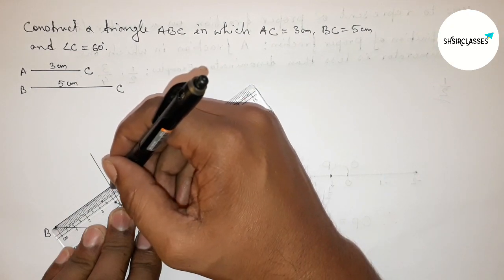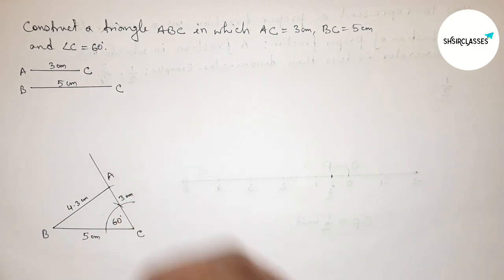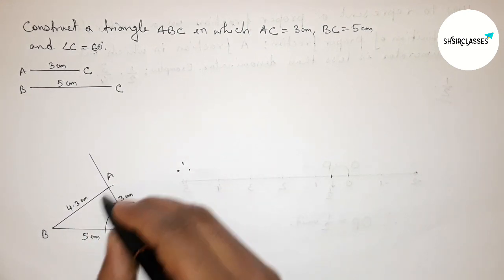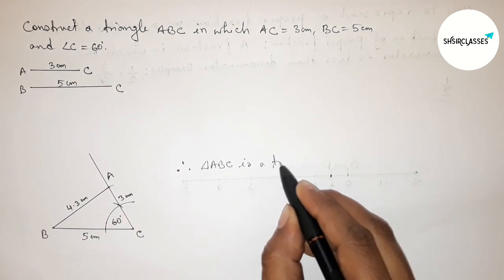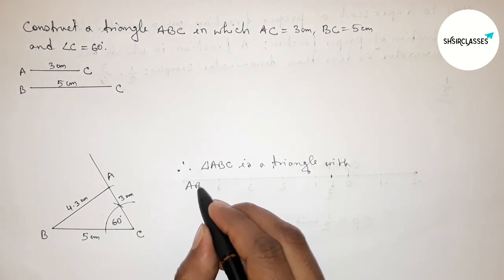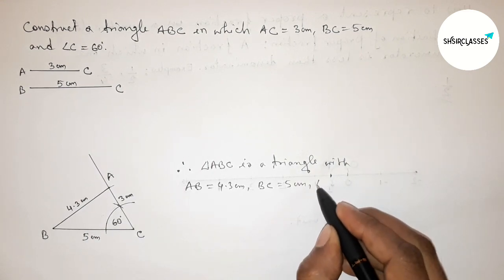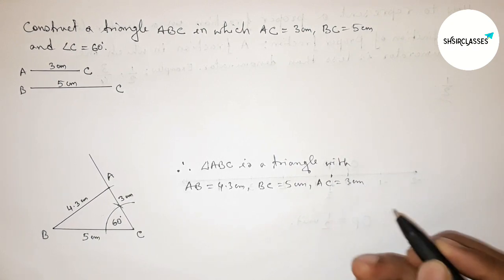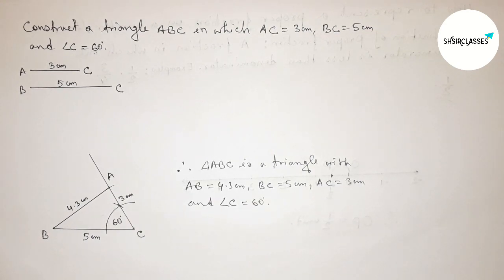AB is approximately 4.3 centimeters. Therefore triangle ABC has AB equals 4.3 centimeters, BC equals 5 centimeters, AC equals 3 centimeters, and angle C equals 60 degrees. That's all — thanks for watching. If this video is helpful to you, please share it with your friends.